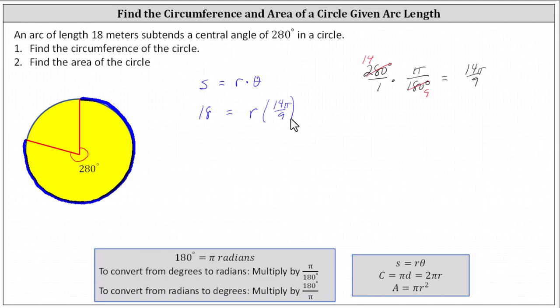To solve for R, we multiply both sides by the reciprocal of 14 pi divided by nine, which is nine divided by 14 pi. Notice on the right side, the product of the reciprocals is one. R times one is R, which gives us R equals...